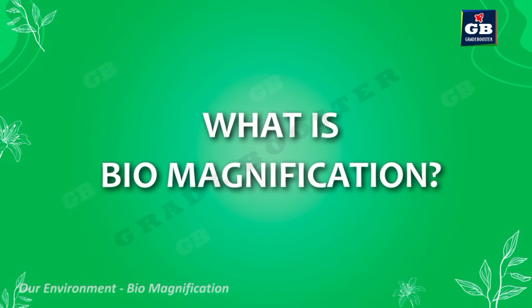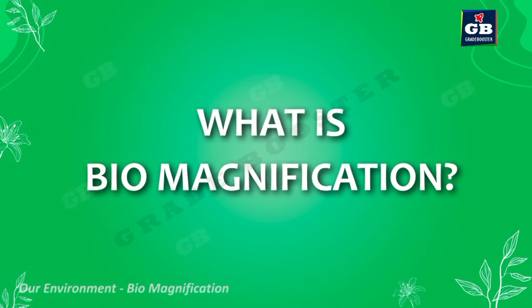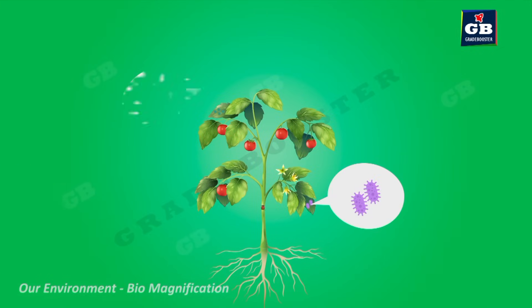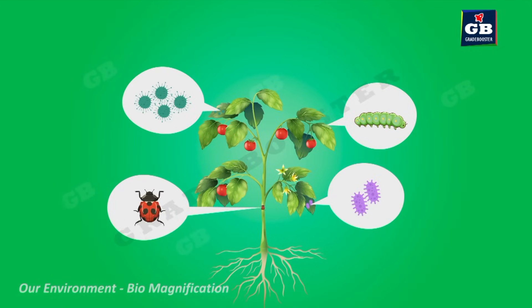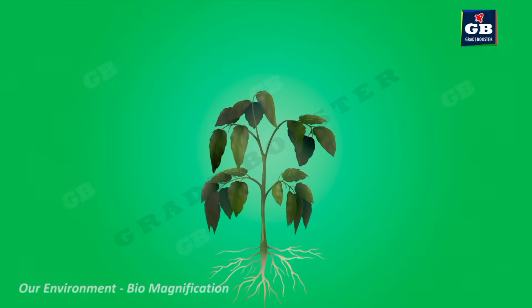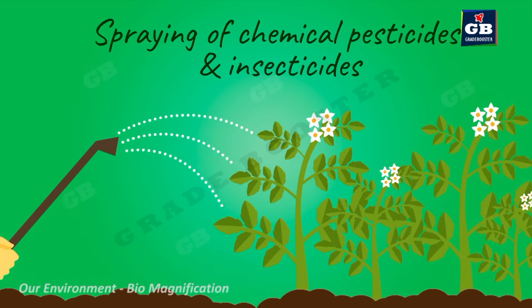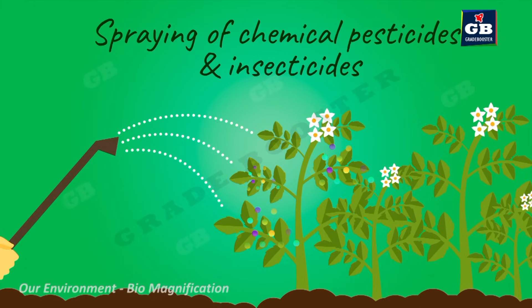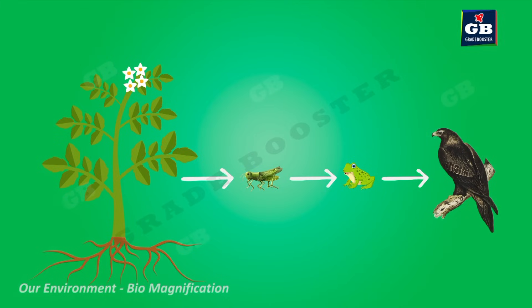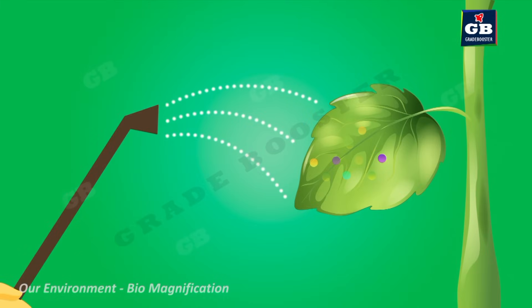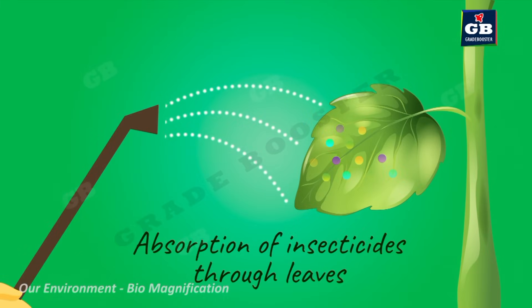What is biomagnification? Bacteria, viruses, and insects attack plants quite often. If these pests are not controlled, they can make plants weak or kill them. That is why in agricultural fields, plants are sprayed with chemical pesticides and insecticides. These pesticides may enter food chains and cause many problems.